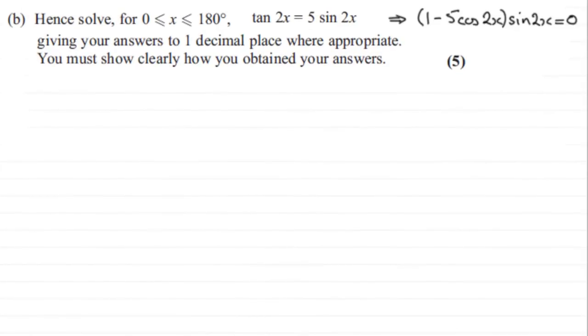Hi, now in this next part of the question we're asked to hence solve for 0 ≤ x ≤ 180° this equation tan 2x = 5 sin 2x. It says hence solve because in the first part we had to show that this equation could be written as (1 - 5cos 2x) sin 2x = 0. If you'd like to give this a go, pause the video, come back when ready, and you can check your working against mine.